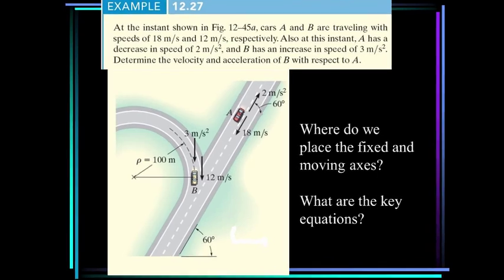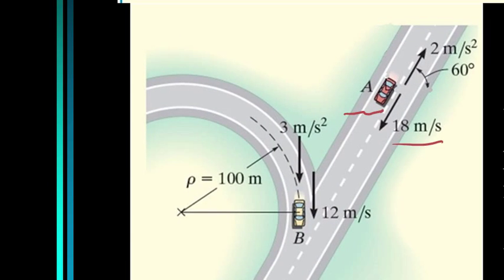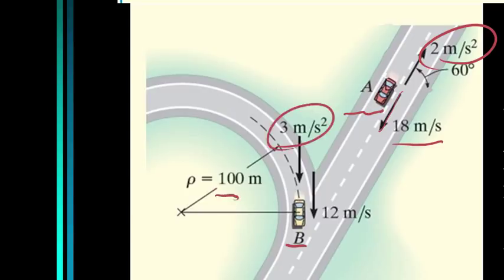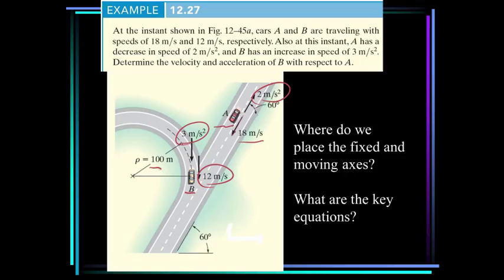Here's another problem. We have a car at A traveling at 18 meters per second in one direction, accelerating at 2 meters per second squared in the opposite direction. We also have a car at B traveling in a circular path of radius 100 meters, accelerating at 3 meters per second squared, with a velocity of 12 meters per second. We want the velocity and acceleration of B with respect to A, so we place our moving axes x′, y′ on A.